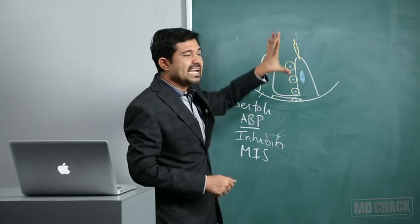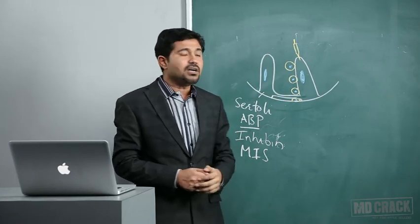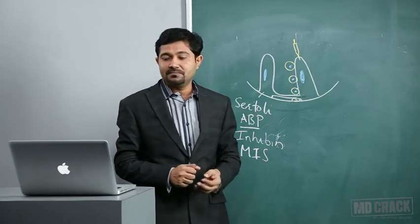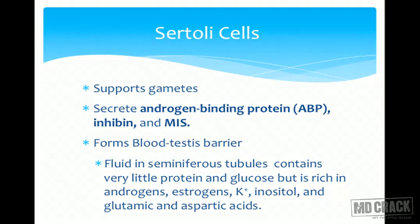The blood-testis barrier is important to maintain the specific environment of the lumen of the seminiferous tubule. The lumen has components different from plasma — very little protein and glucose compared to plasma, but it is rich in androgens, estrogens, potassium, inositol, glutamic acid, and aspartic acid.